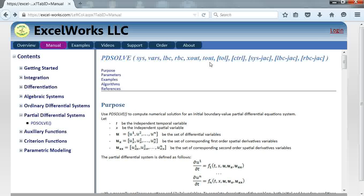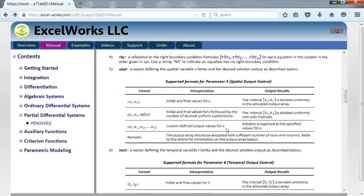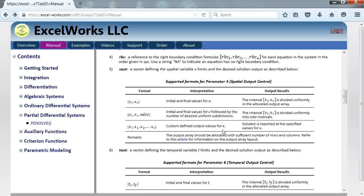The fifth and sixth parameters define the domains for the equation, the spatial domain and the time domain. They also allow you to customize the output, similar to the format used for the initial value problem solver as well as the boundary value problem solver. This is all described in detail in the help page.